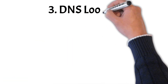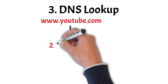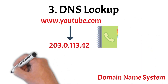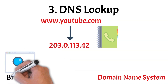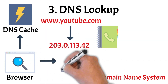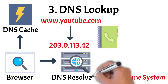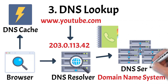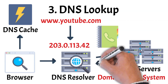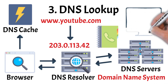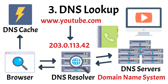Before the browser can load the website, it first needs to find the actual IP address behind the domain name. This is where the Domain Name System, or DNS, comes in — often described as the Internet's phone book. The browser first checks its DNS cache to see if it already knows the IP address. If not, it asks a DNS resolver, typically provided by your Internet service provider. The resolver may also check its own cache, and if there's no match, it sends requests to various DNS servers on the Internet to find the correct IP address. Once found, the resolver sends it back to the browser, which can now contact the correct web server.